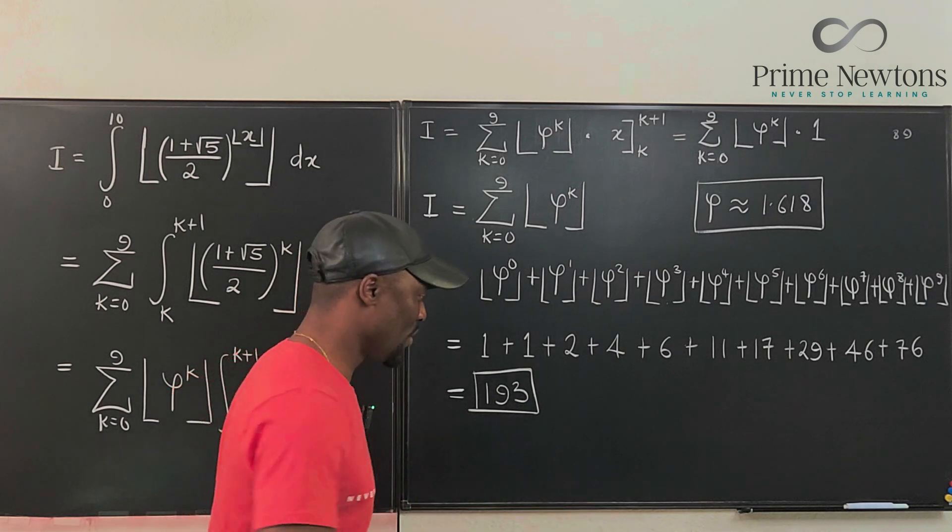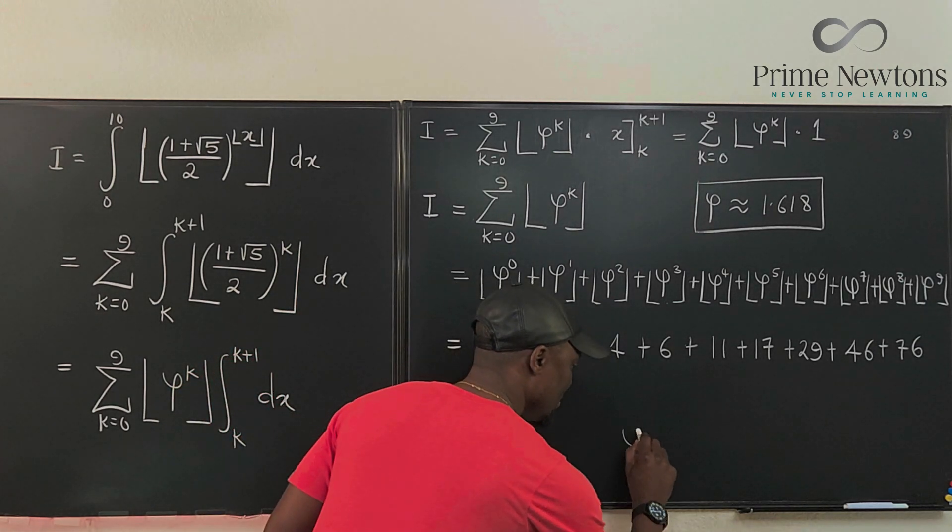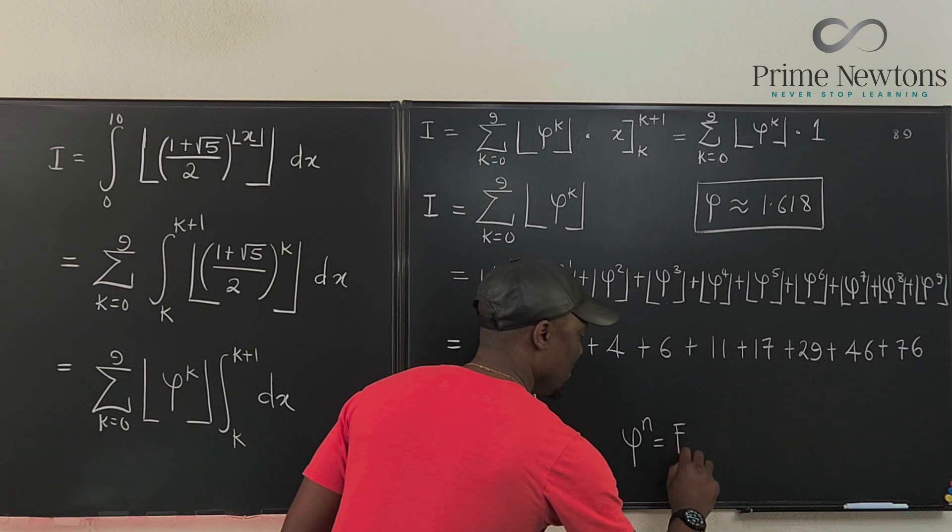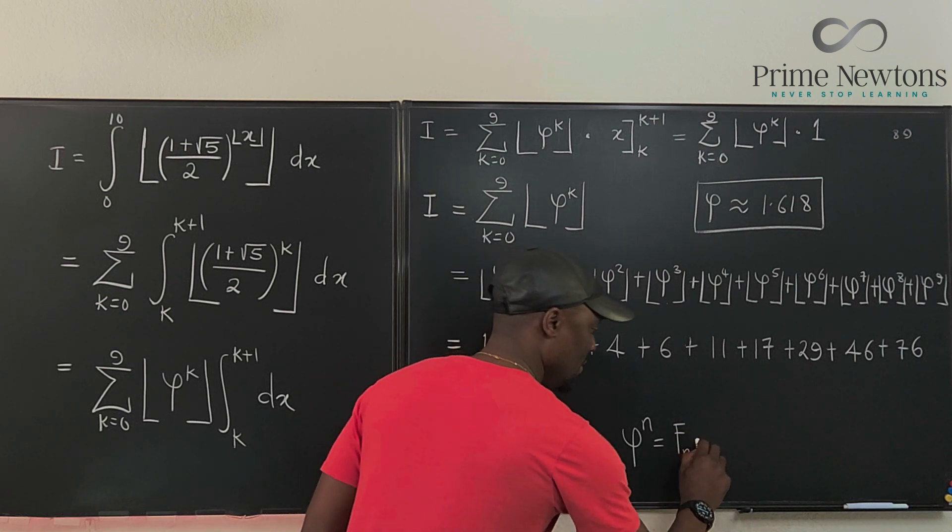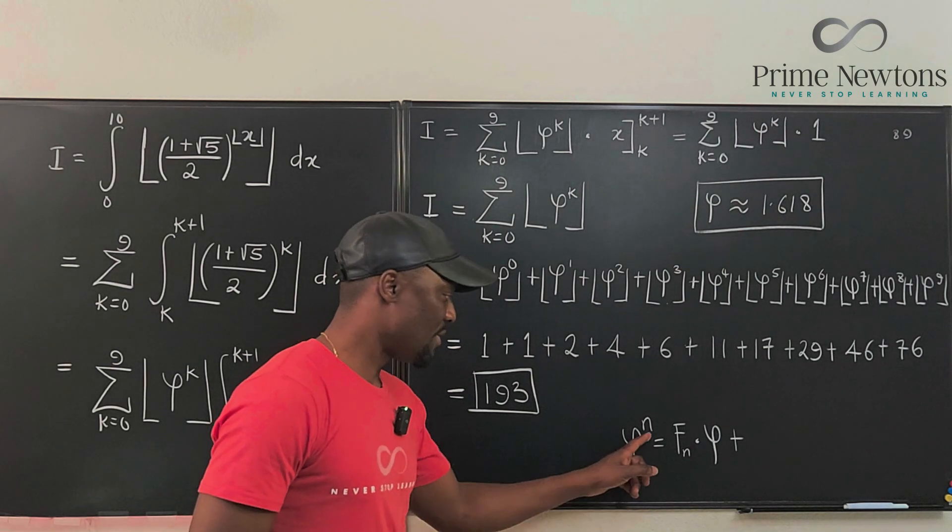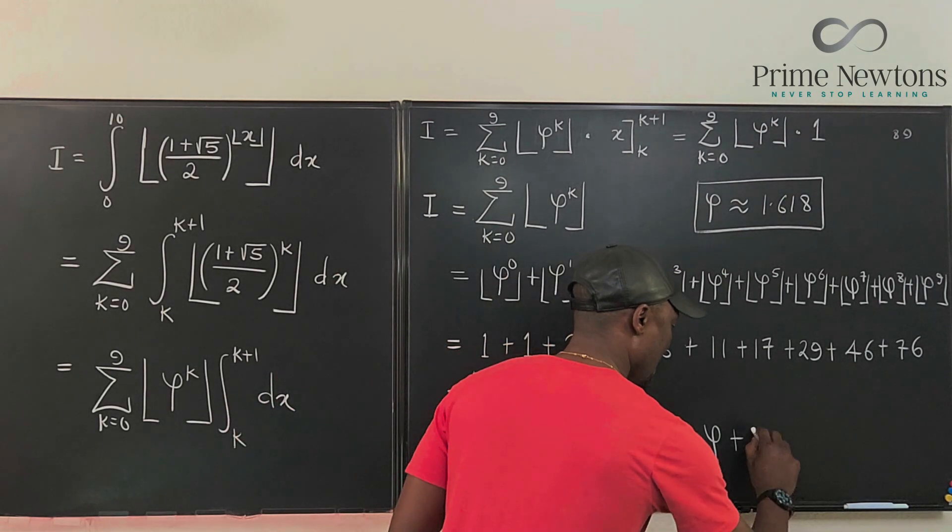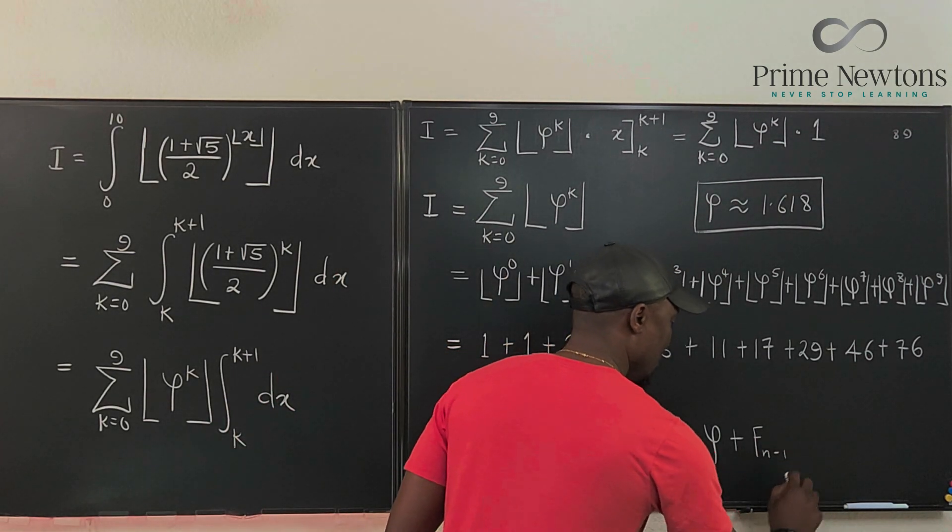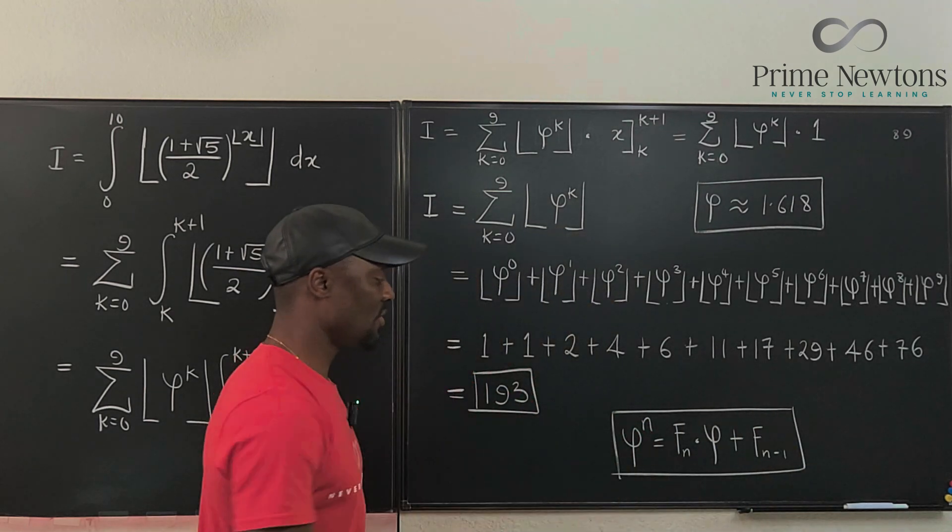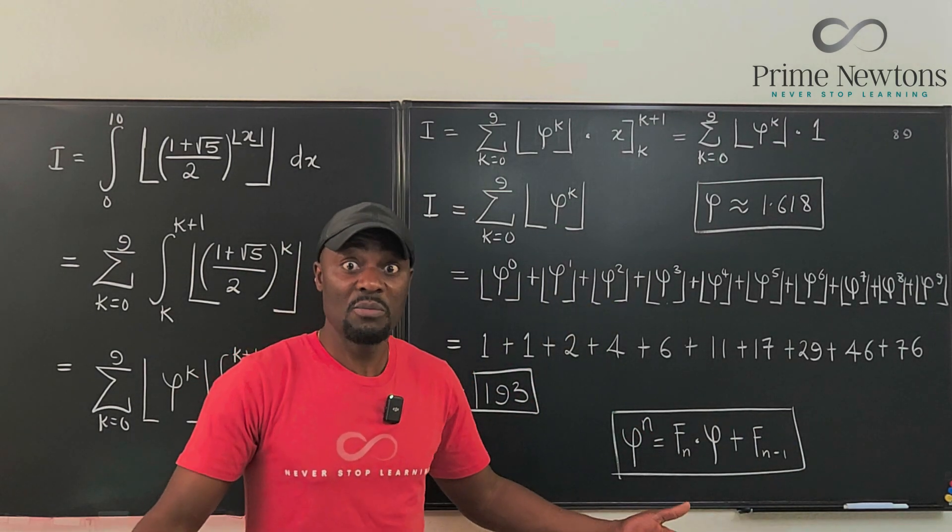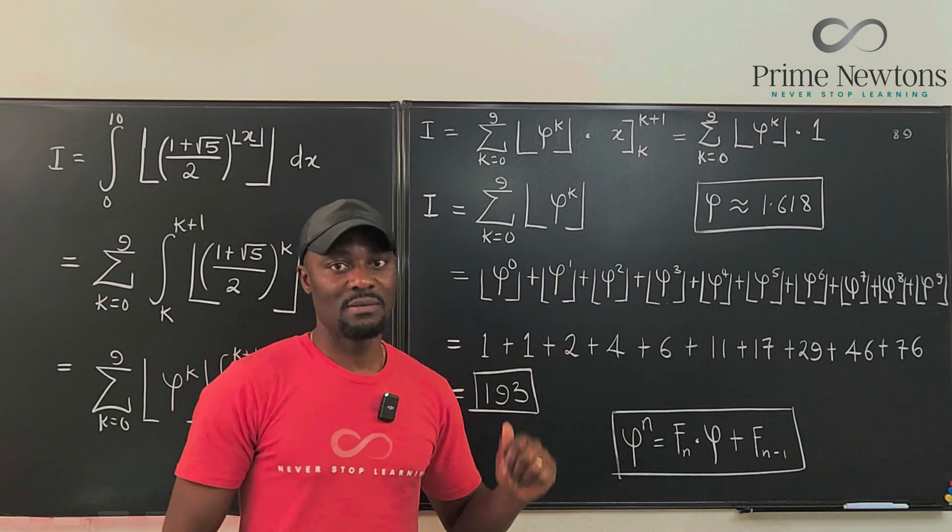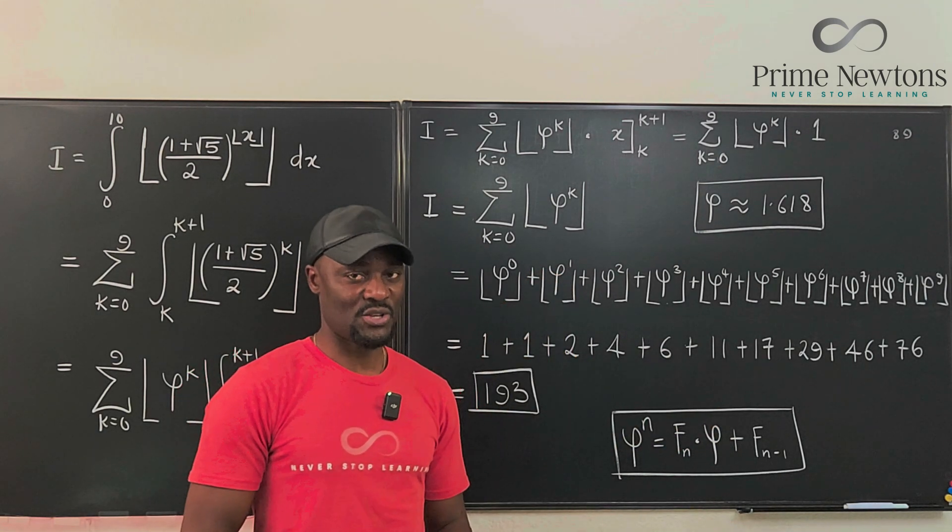Let me put that formula on the board one more time. Phi to the N is equal to the Fibonacci number multiplied by phi, plus the Fibonacci number before N, which is F of N minus one. All you need is know what the Fibonacci number is. The Fibonacci number is 1, 1, 2, 3, 5, 8, 13, 21, 34, and you keep going.